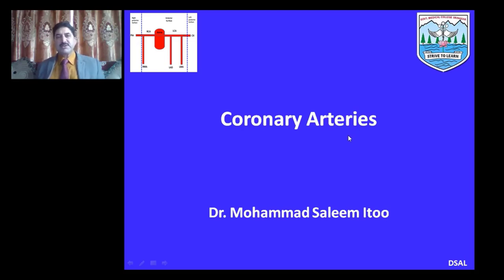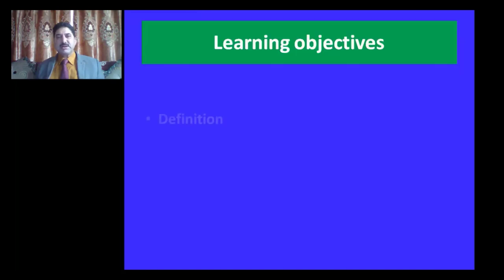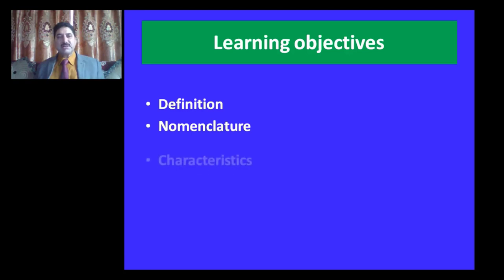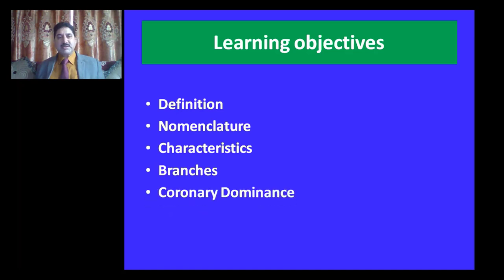Good morning students. Our today's lecture is on anatomy of coronary arteries. The learning objectives for this session are: at the end of session, students should be able to define coronary arteries, describe nomenclature of coronary arteries, know characteristics of coronary arteries and how they differ from other arteries of our body, know branches of coronary arteries, describe coronary dominance and its clinical importance, and discuss supply anatomy of coronary arteries.